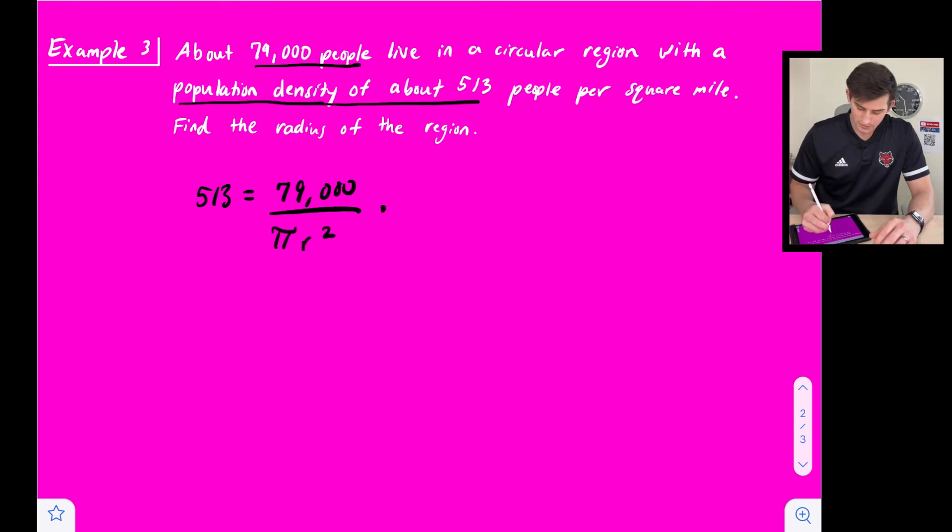So we could multiply both sides by pi r squared. So now that gets rid of that. Now we're going to have 513 times pi r squared is equal to 79,000.